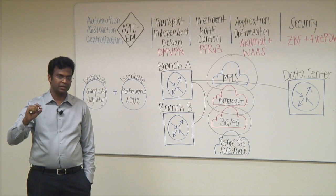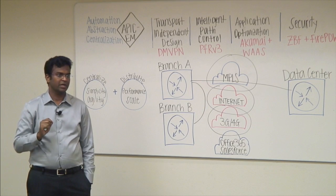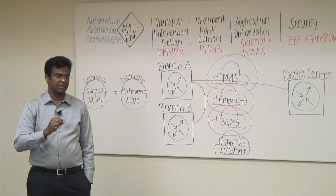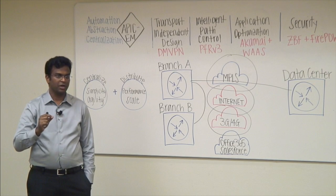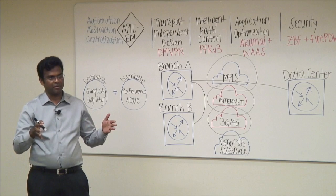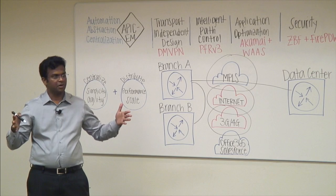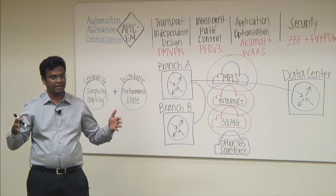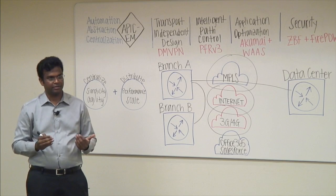We don't have exact data on where it actually breaks, but for anything in the two to three thousand range, you can easily deploy. For bigger scale deployments — say 6,000 — which we are actually in the process of deploying right now, we are dividing them into virtual domains. Once you divide into virtual domains, you can actually scale way higher.